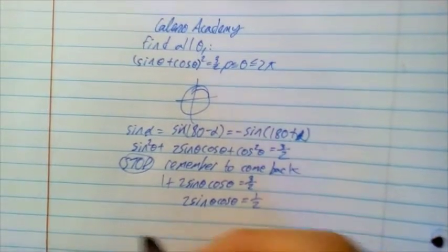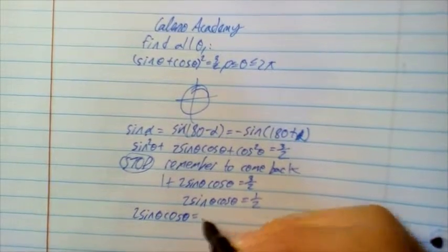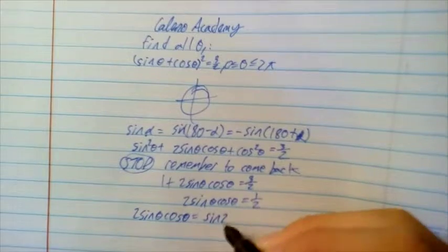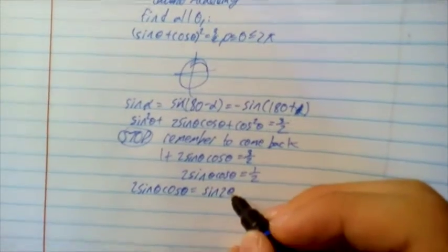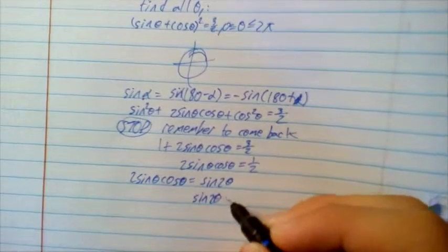Making the substitution that 2 sin theta times cos theta is equal to sin 2 theta, we have that moving forward, sin 2 theta is equal to 1/2.